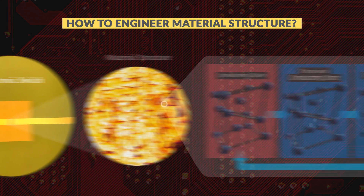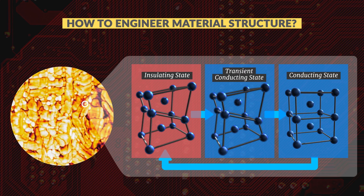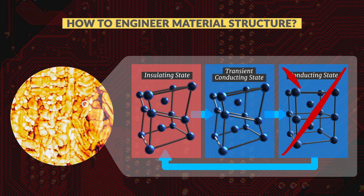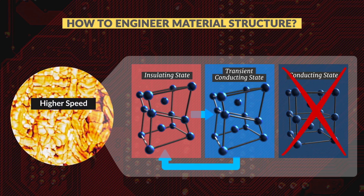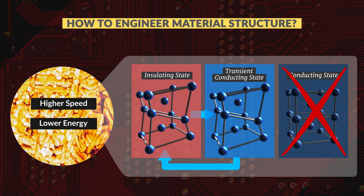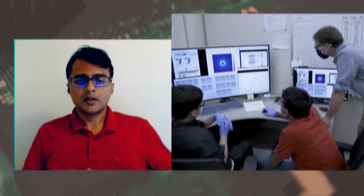This will allow us to make devices in which electronic switching can occur without any atomic motion. And if we don't need to move atoms, then we can make devices which can operate much faster, while consuming dramatically less energy. The broader implication of our work is that we now have a new way of synthesizing materials that do not exist under natural conditions.